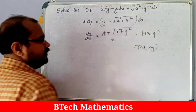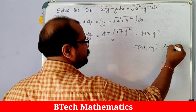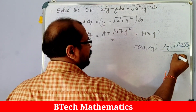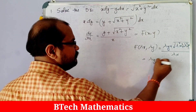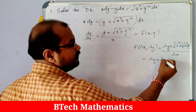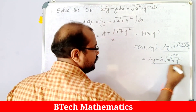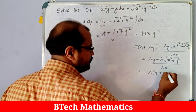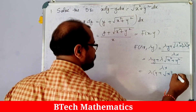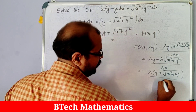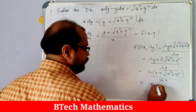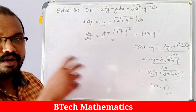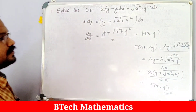Replacing x and y with lambda x and lambda y, we get lambda y plus root of lambda squared x squared plus lambda squared y squared, divided by lambda x. Taking lambda squared outside the root gives lambda times root of x squared plus y squared. Taking lambda outside the numerator and cancelling with lambda in the denominator, we get f(x, y). Since f(lambda x, lambda y) equals f(x, y), this is a homogeneous function, and therefore this differential equation is homogeneous.